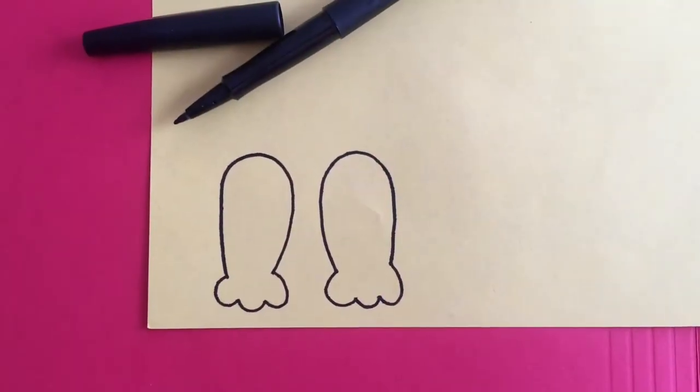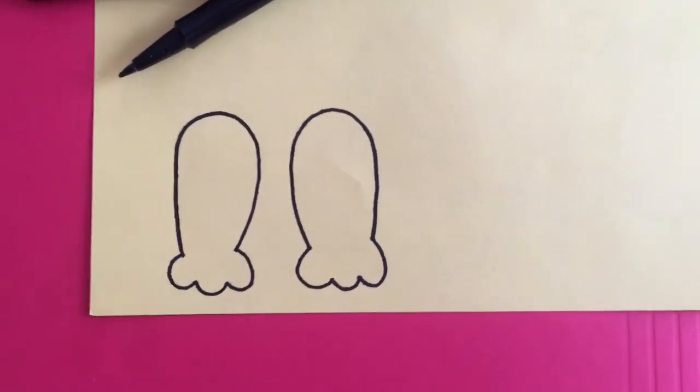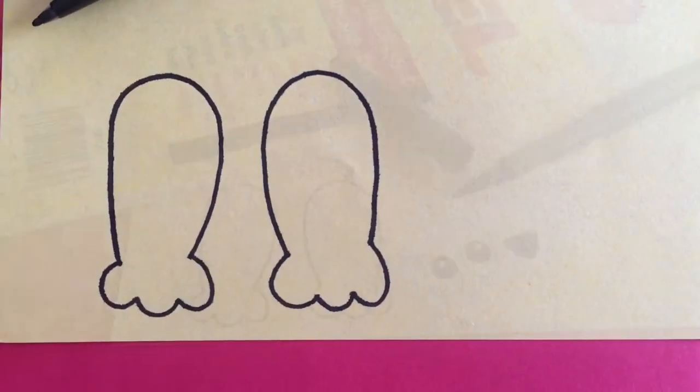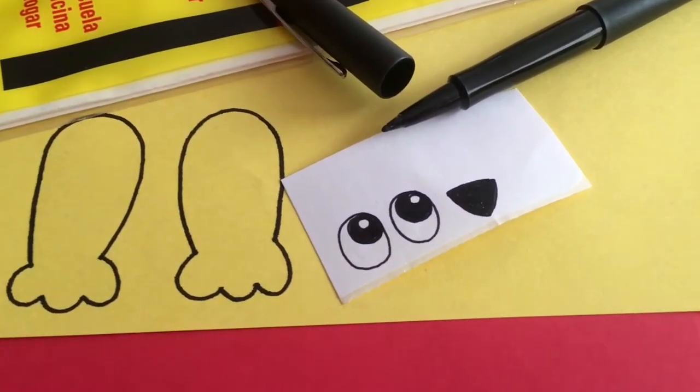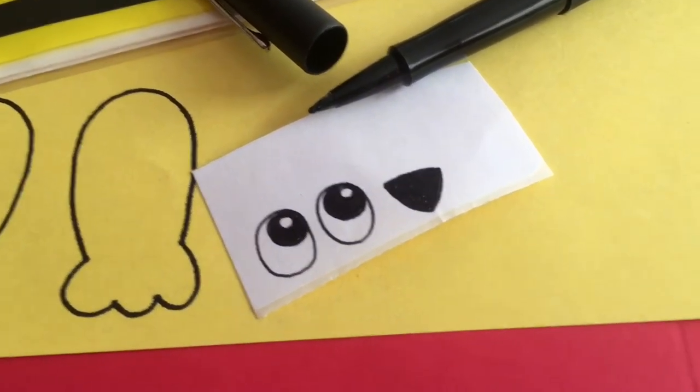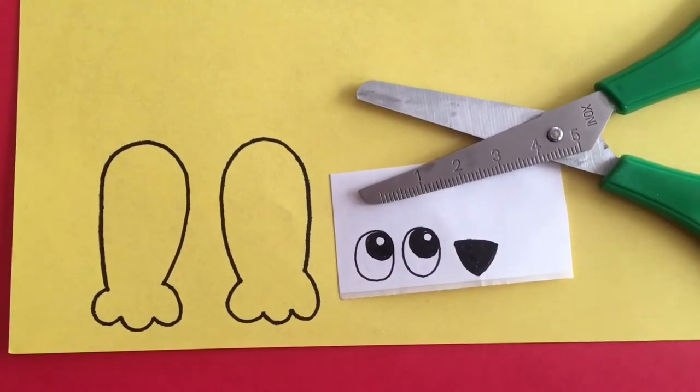Now using your pen or your marker, draw two legs. Now on your adhesive labels or the white sheet of paper, draw two eyes and a nose. Cut them.